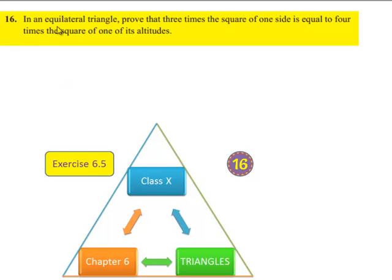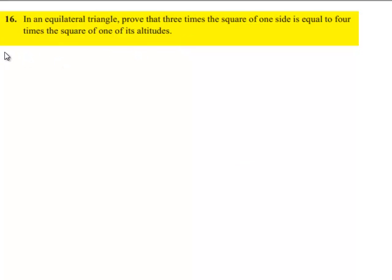Moving on to the 16th sum, in an equilateral triangle, prove that 3 times the square of one side is equal to 4 times the square of one of its altitudes. Now, moving on to solution.